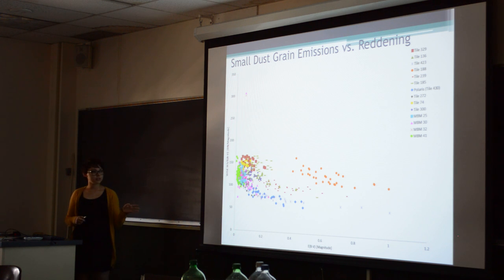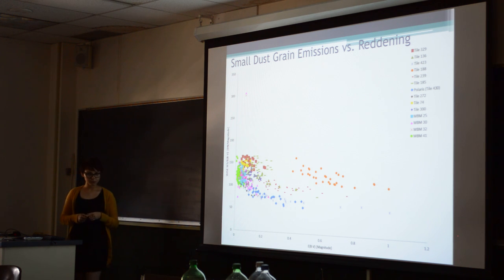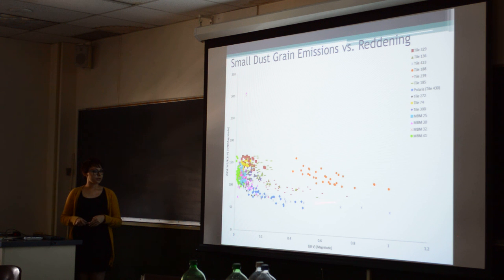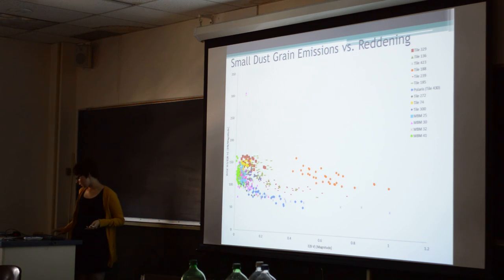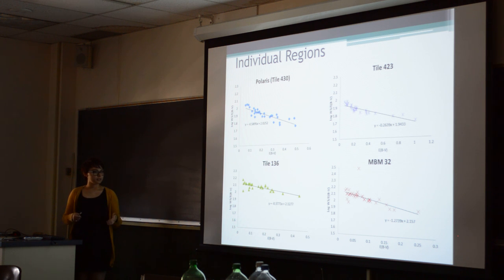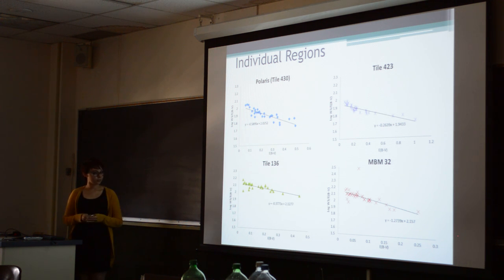This is further examination of how extinction affects the small dust grain emissions. As you saw in that extinction curve, UV photons are especially susceptible to extinction. We see that here with kind of an exponential decay. As extinction increases, we see fewer emissions of the small dust grains. That's more apparent when we look at individual regions — here is the log of that normalized W3 data, and you can see in each of these that they're decaying, showing an inverse relationship.